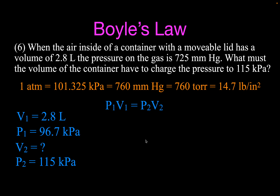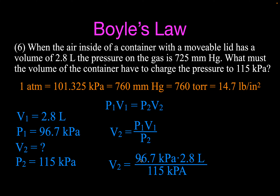Now I have both pressures in the same units and I can use my Boyle's Law equation. I want to find V2, so I plug in P1 = 96.7 kilopascals (the converted value) and V1 = 2.8 liters, divide by the final pressure of 115 kilopascals, and I get a volume of 2.4 liters. We increased the pressure from 96.7 to 115, and therefore the volume decreases.